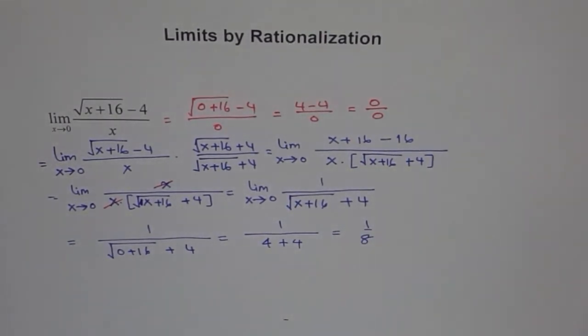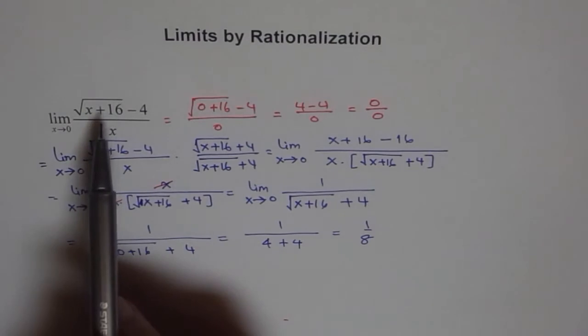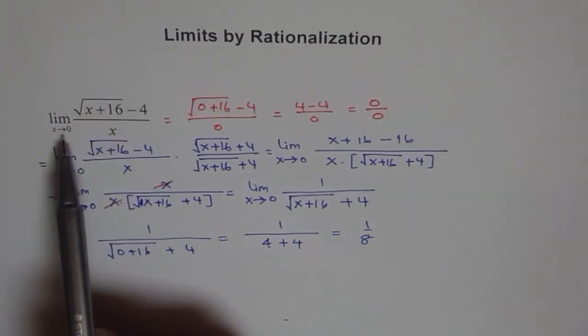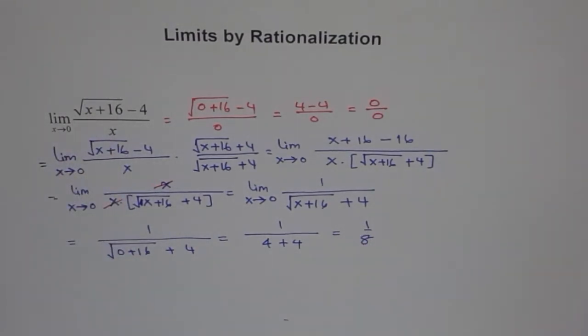So, that's our answer. The limit of this function as it approaches 0 is 1 over 8. So, this is a very important technique and we can always use this technique to rationalize our radicals and then substitute. So, it is very helpful to use whenever you have limits with square roots. I hope you understand and you can employ it in many different examples. Thank you.